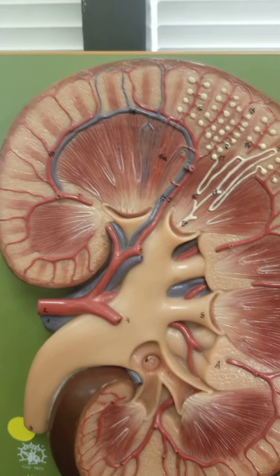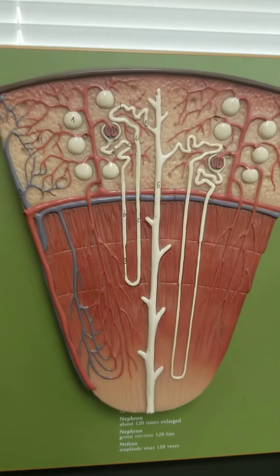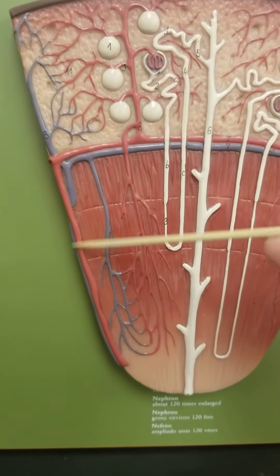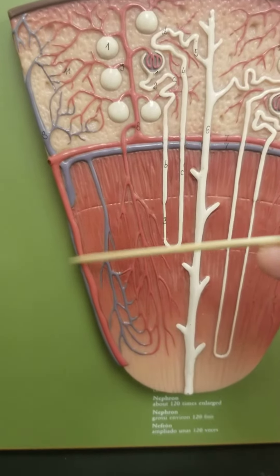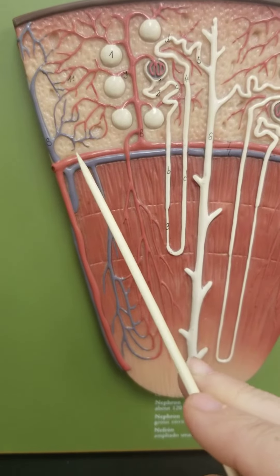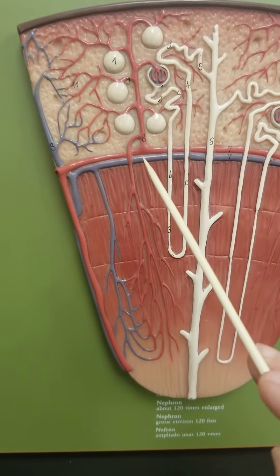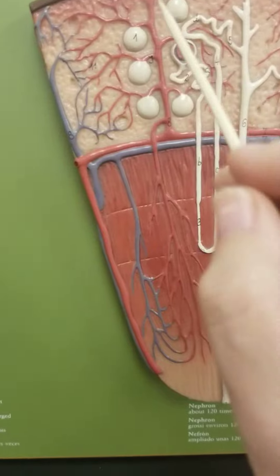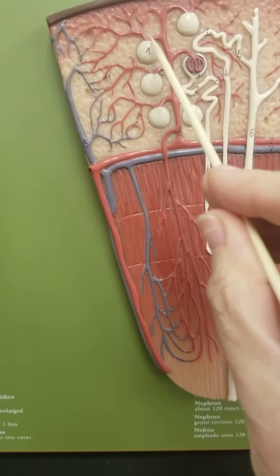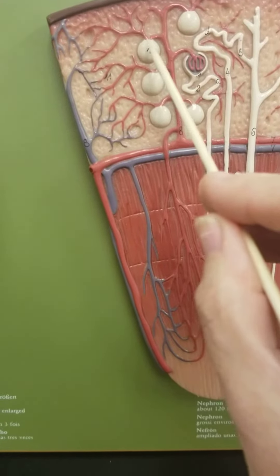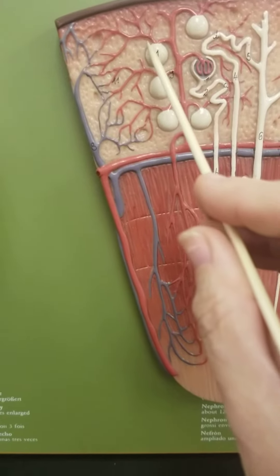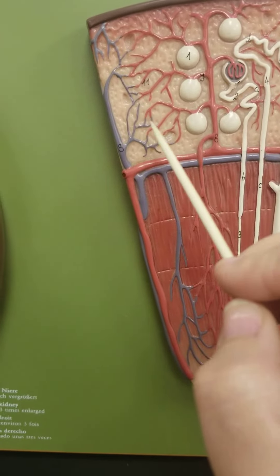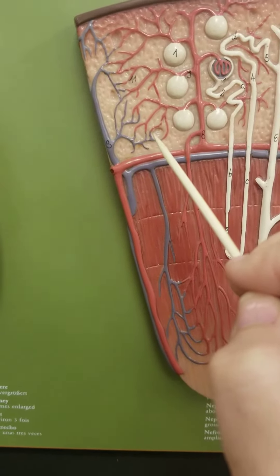Let's look at those same ones on this model. We pick up here on the interlobar artery, here is the arcuate artery, and here is the cortical radiate artery, which will send the blood through the afferent arteriole into the glomerulus, then through the efferent arteriole to the capillary bed.